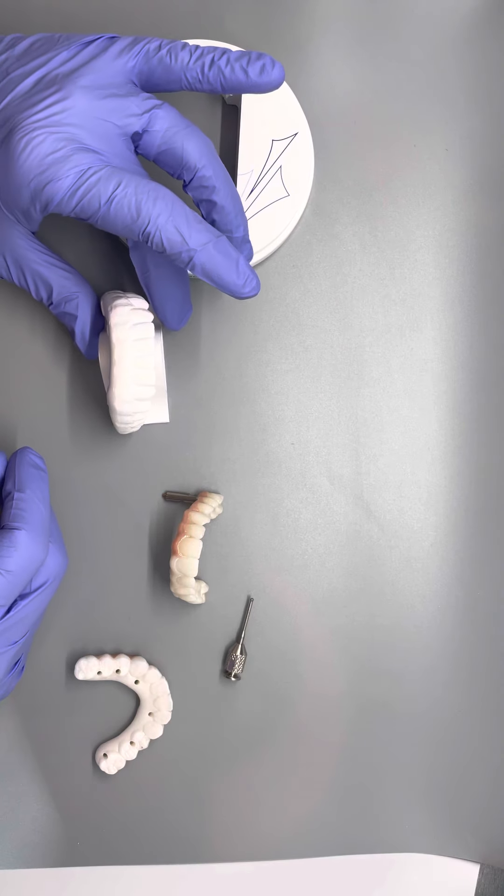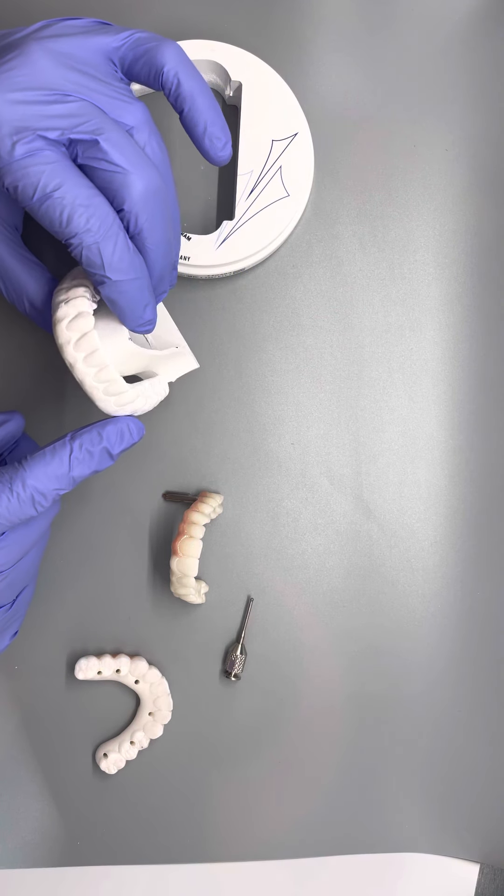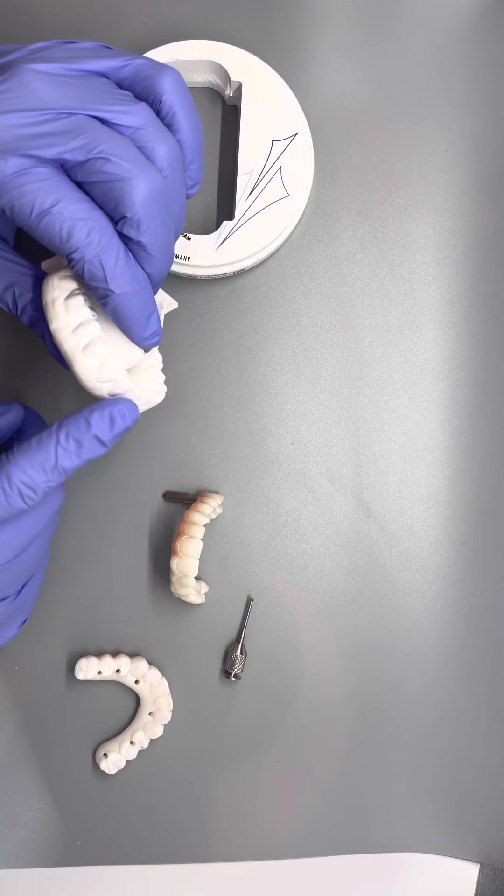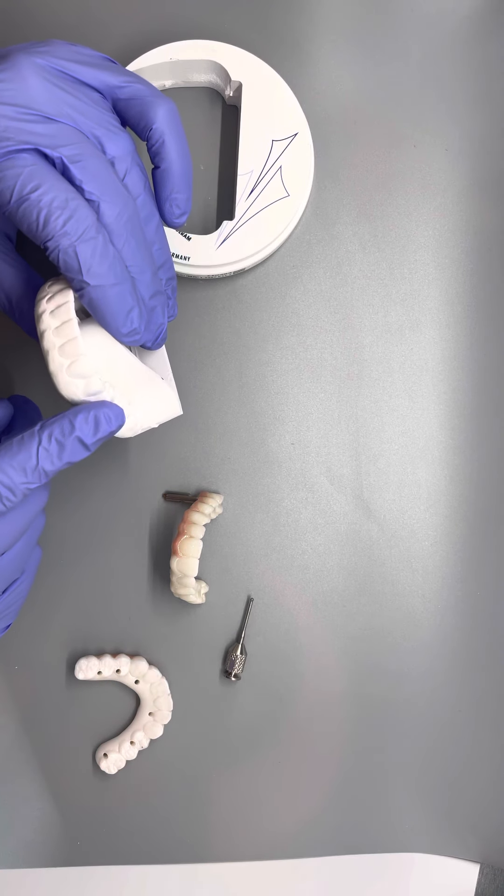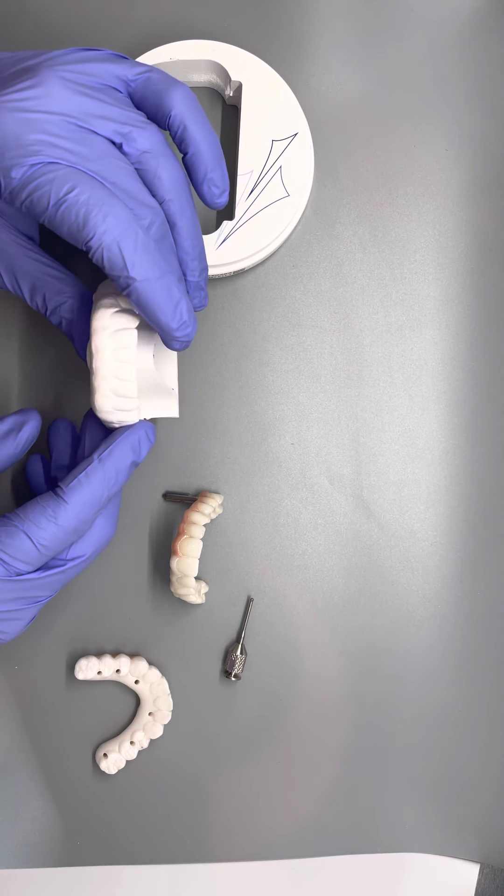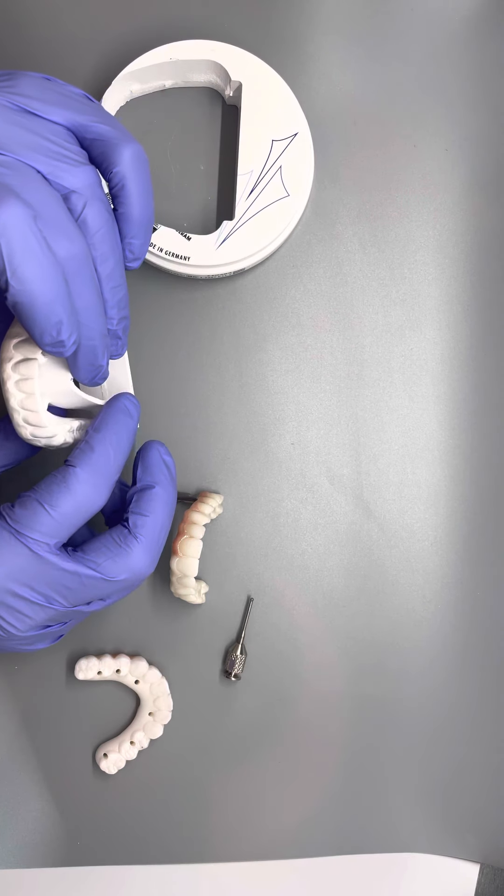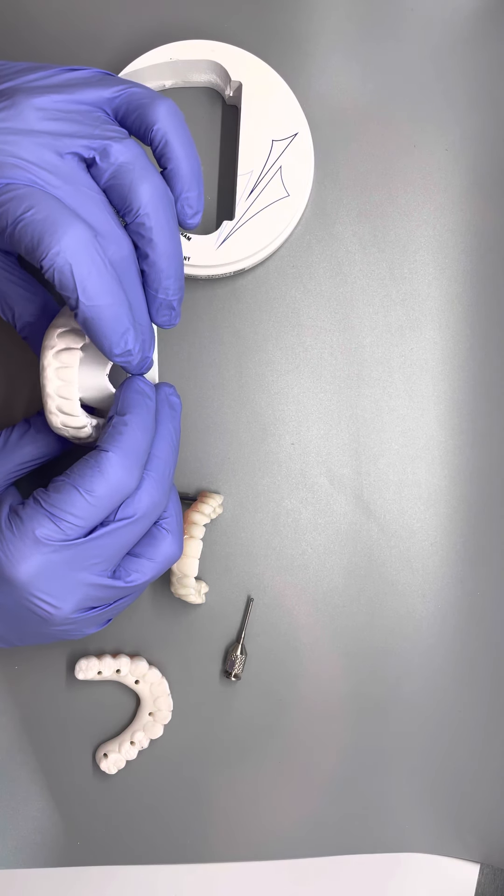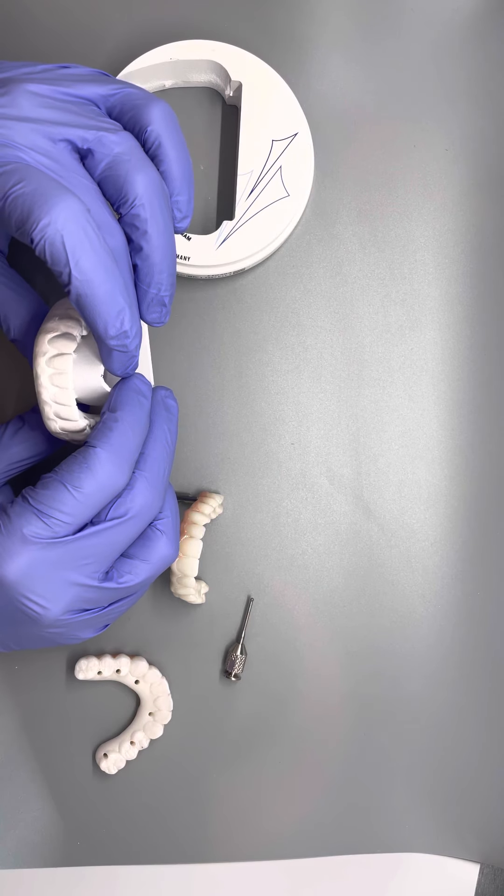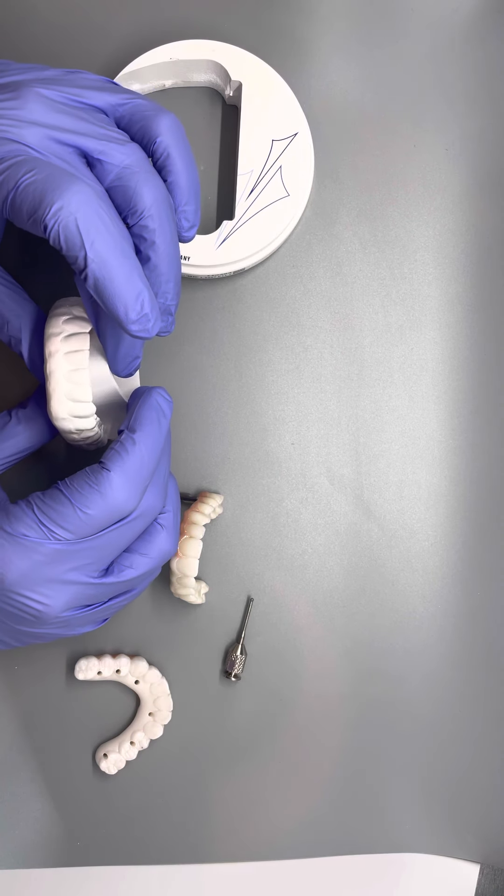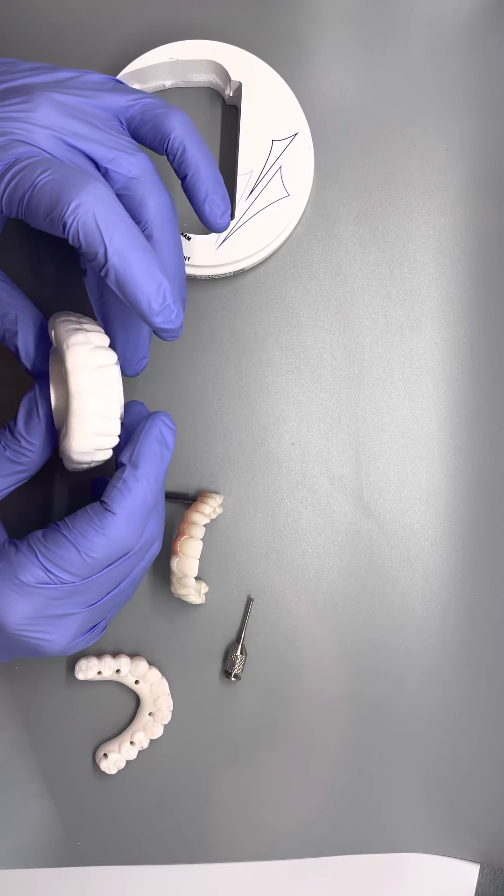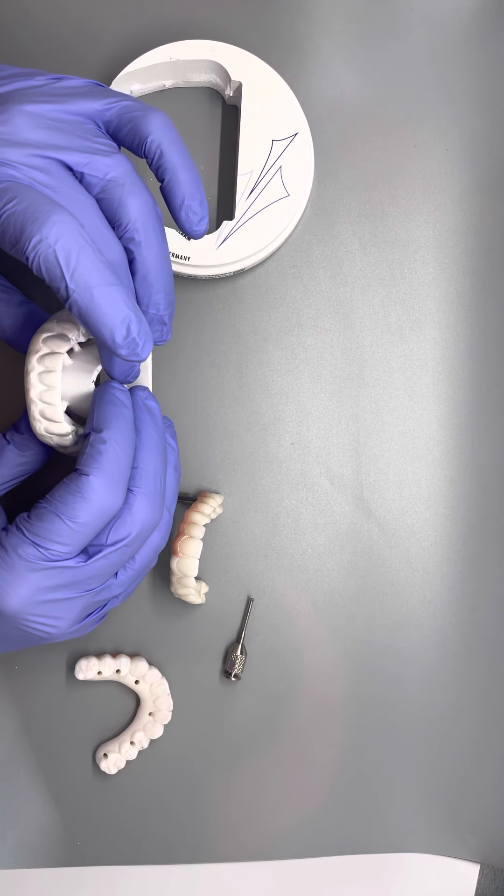So once we get it milled and we make all the customizations to it, give it some character to make it look more natural, then we put it in an oven and we let it cook and it cooks extremely hot. Cooks it about 1500 degrees Celsius and it cooks for a very long time, up to 18 to 20 hours or so.